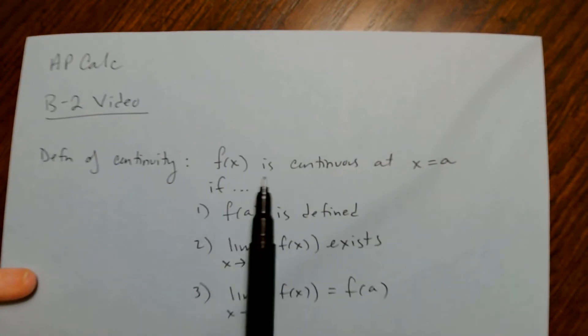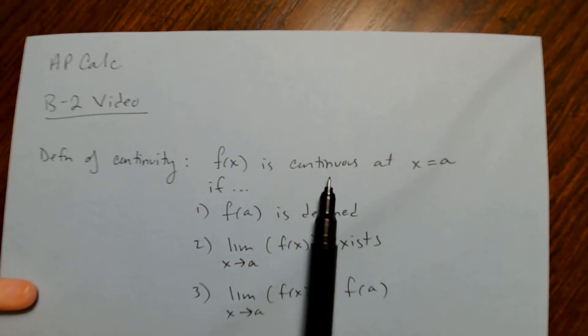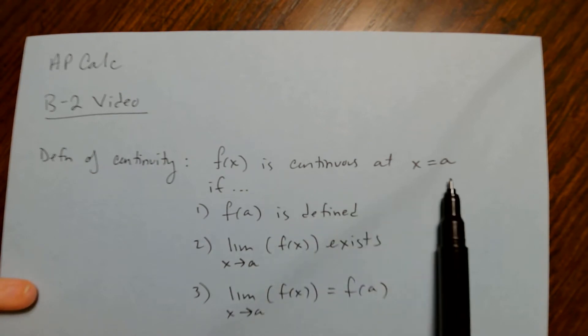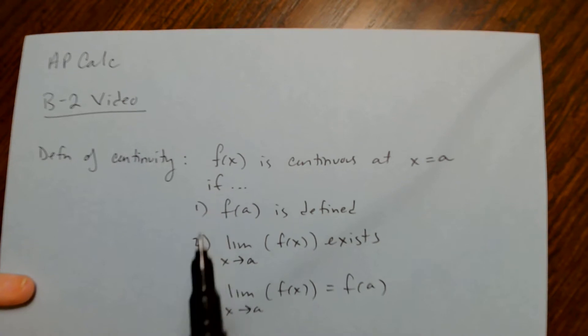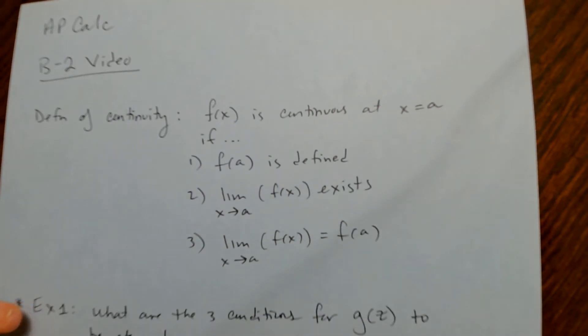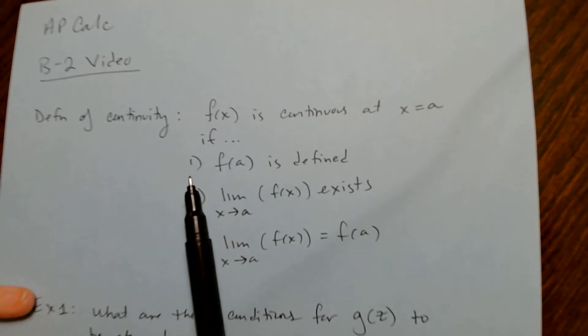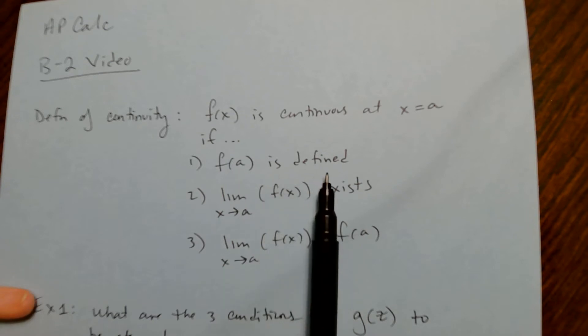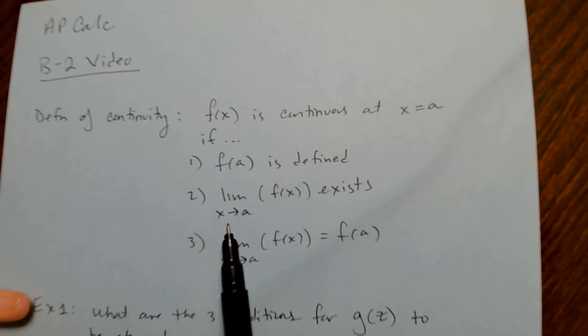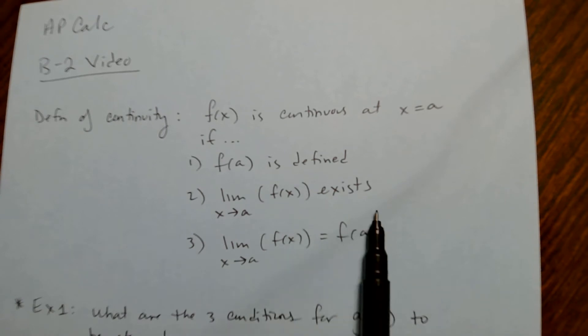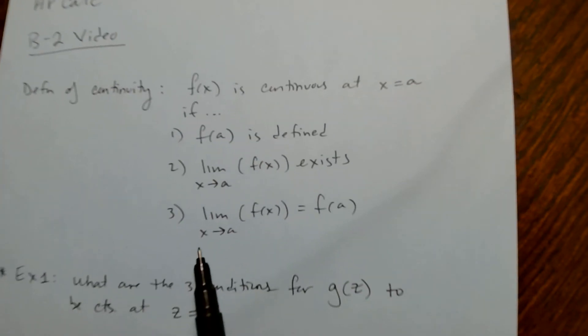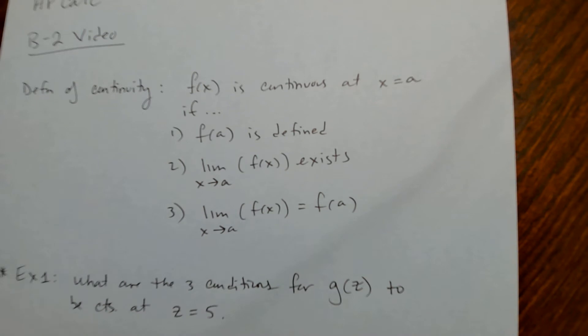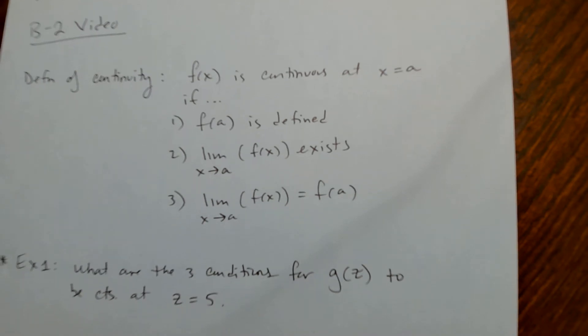f(x) is continuous at x = a if three conditions are true. Number one: f(a) is defined. Number two: the limit as x approaches a of f(x) exists. And number three: the limit as x approaches a of f(x) equals f(a).